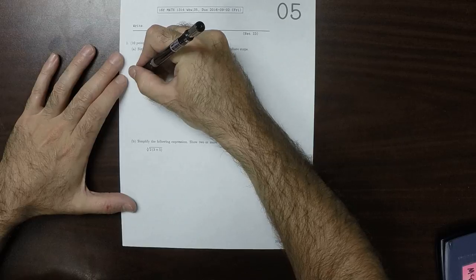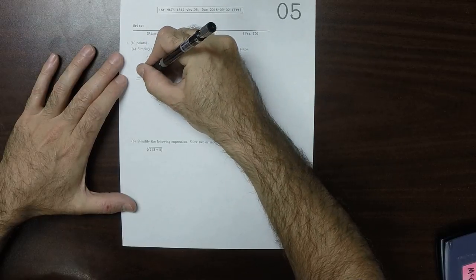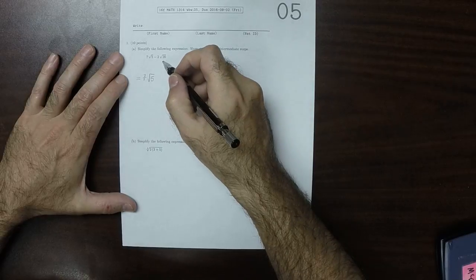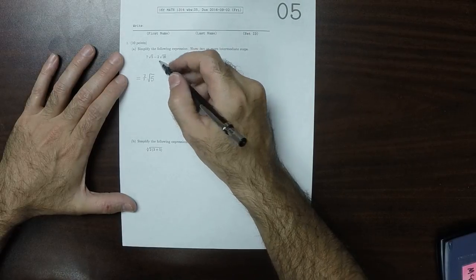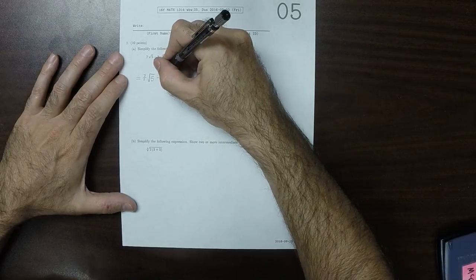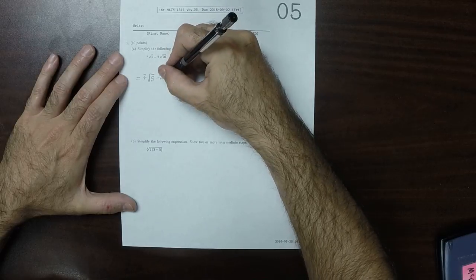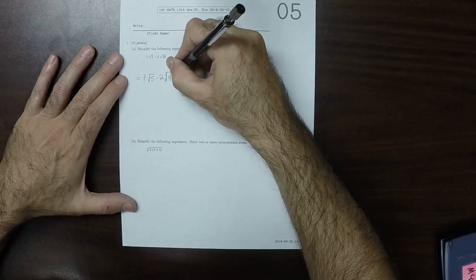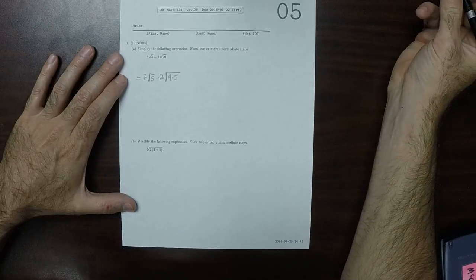So this would be 7 square root 5. The only simplification that can occur is the square root of 20. So this would be minus 2. And then 20 can be written as 4 times 5.